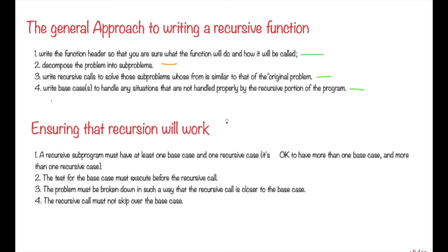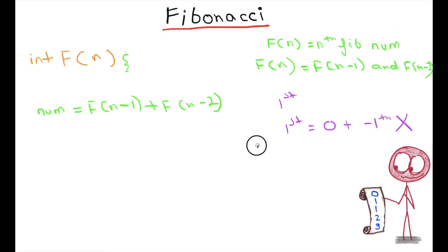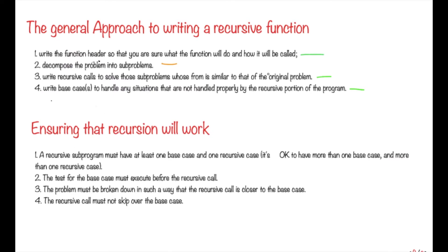The fourth step is to write the base case to handle any situation not handled properly by the recursive portion. Our base case is the first Fibonacci number, because to calculate the first Fibonacci number we would need the 0th and the -1st Fibonacci number, and -1 is invalid. Therefore our base case is: whenever n is less than or equal to 1, return n. So if n <= 1, return n. We now follow all four steps for writing the recursive function.